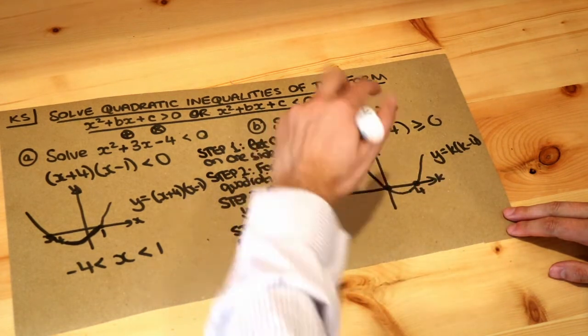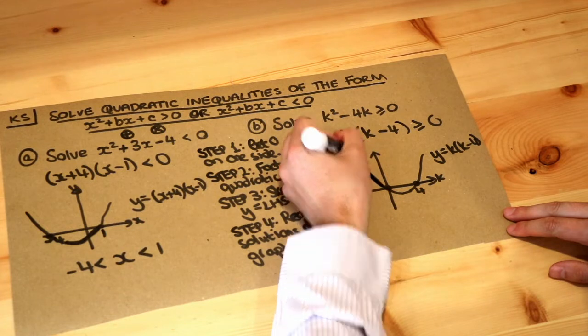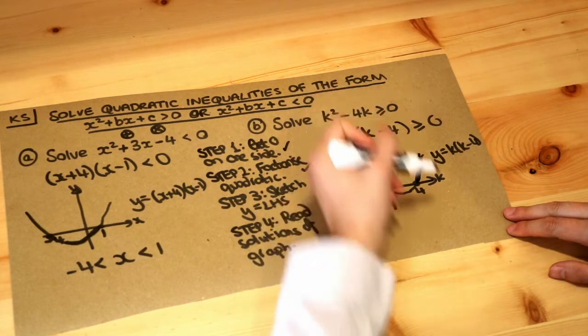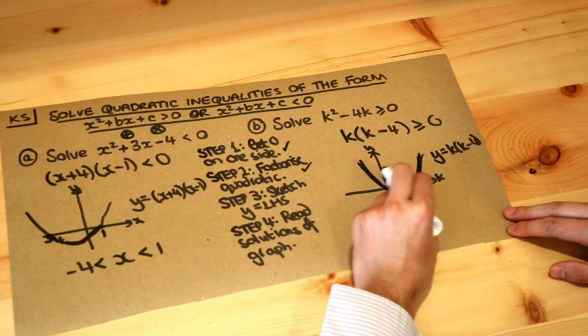Well we can see the y value is positive here. And we can also see the y value is positive here. So we're interested in these two parts of the graph.